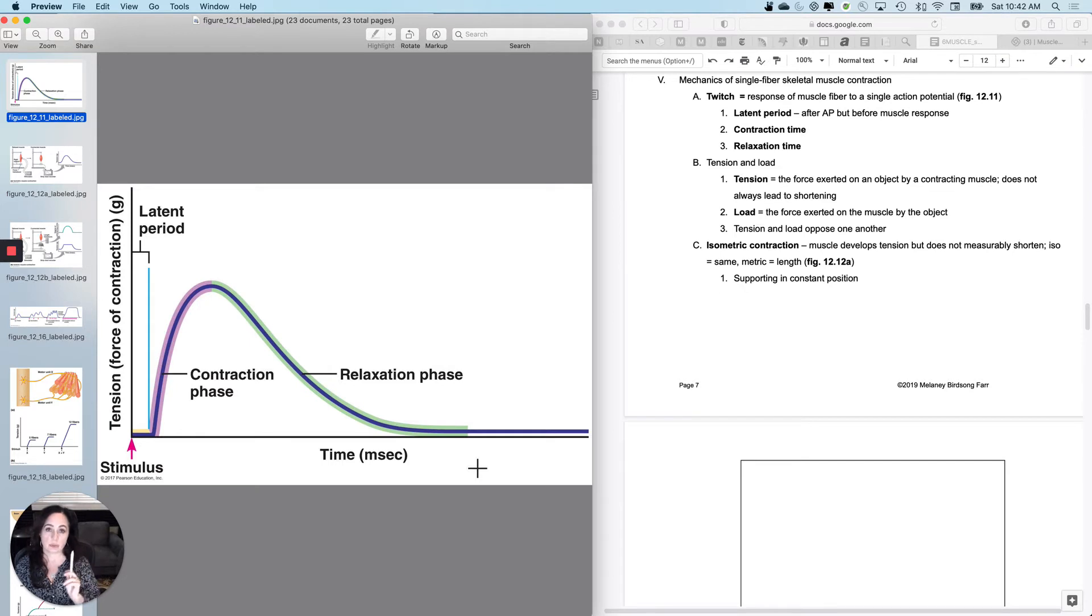First off the relationship between tension and load. So when you are generating tension, this is the force exerted on an object by a contracting muscle. So if I'm lifting up this pin, then the force that is exerted on an object would be the weight of my forearm plus the weight of this pin by this contracting muscle of my biceps brachii, my brachialis. Now it doesn't always lead to measurable shortening. So right now I can, for instance, generate tension in my rectus abdominis without actually moving my body. Now, microscopically, you are definitely doing some movement, but it doesn't always lead to measurable shortening. So you can generate tension